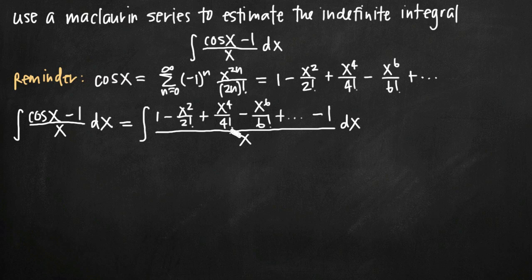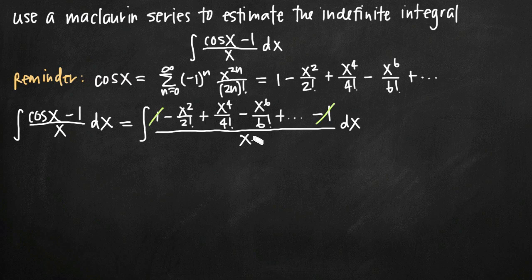Now, in our numerator we have this positive 1 value at the beginning of our Maclaurin series and a negative 1 value that came from our original integral. Those two cancel with one another, and what we're left with is just the negative x squared over 2 factorial and the other terms of the Maclaurin series, all divided by x. So what we want to do now is divide through each term by x to get rid of our denominator and simplify our integral.